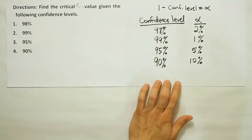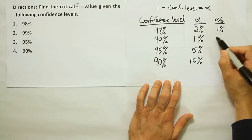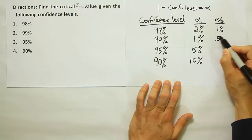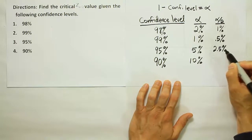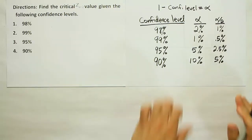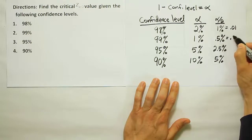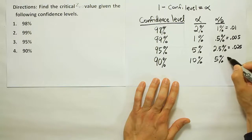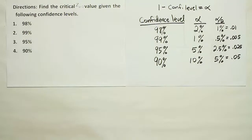And, of course, figuring out what alpha by 2 is, that's really simple. Just divide these in half. 1%, 0.5% or one half of 1%, 2.5%, 5%, etc. And if you wanted to write these as a decimal, this is 0.01, this is 0.005, this is 0.025, and this is 0.05. Remember, just move the decimal point over two places, and that gives you the decimal version. And that's all we need.